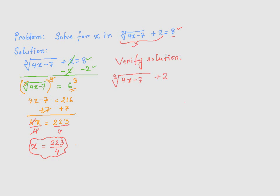So I'm going to plug in the value right now. So cube root of 4x, 4 times x, which is going to be x is 223 over 4, then minus 7, then plus 2.